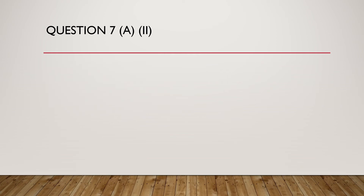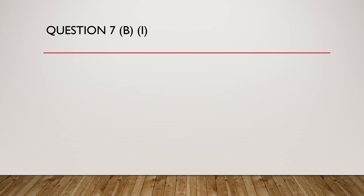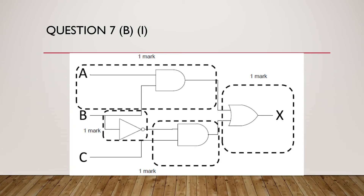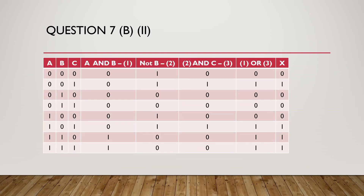For the second part, the truth table is completed as shown. Part B, first part: Draw the logic circuit for the statement — A is 1 AND B is 1, OR NOT B is 1 AND C is 1. The diagram is as follows, with a description of how the marks are awarded also shown. Question 7B part two: Complete the truth table for the logic statement in part B. The answer for X should be 0, 1, 0, 0, 0, 1, 1, 1.